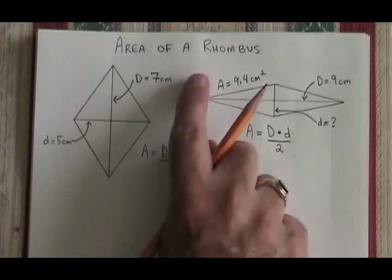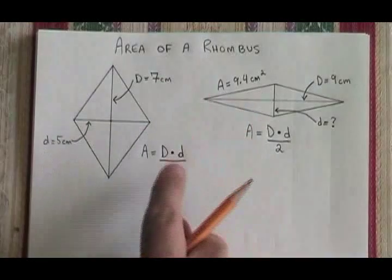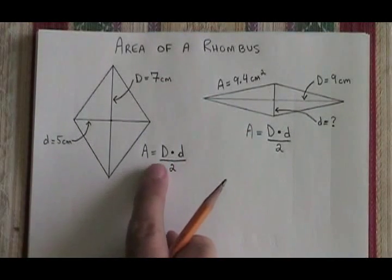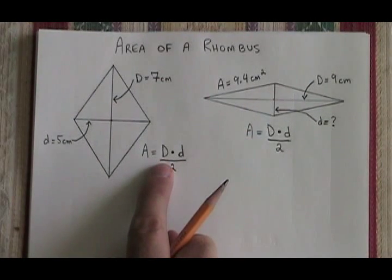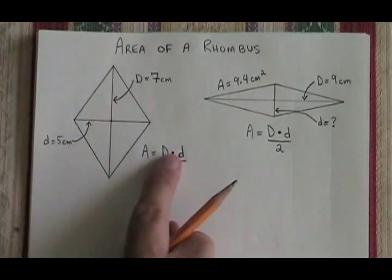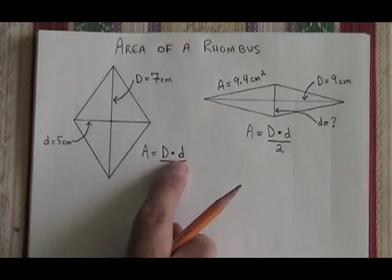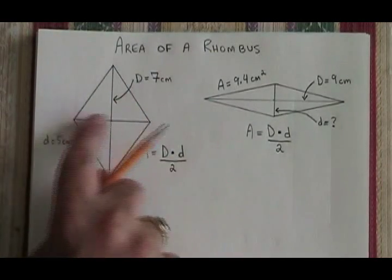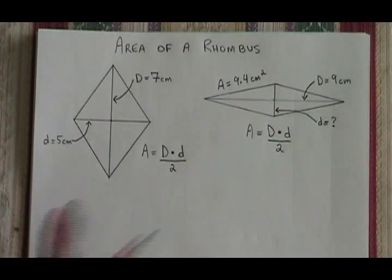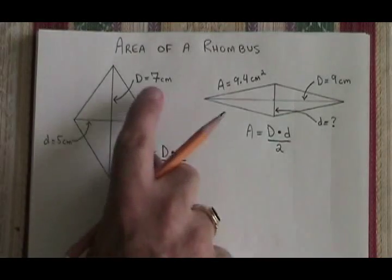The formula for the area of a rhombus looks like this. Area equals capital D, which is the length of the longer diagonal, times lowercase d, which is the length of the shorter diagonal, over 2.